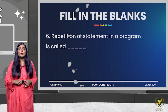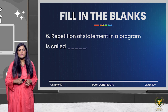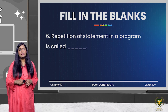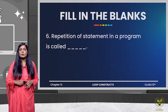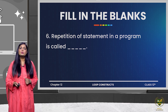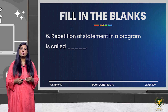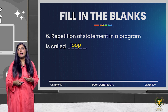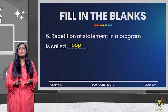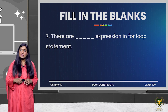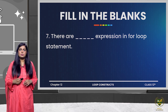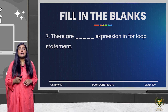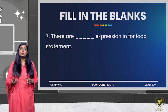The next question is: repetition of statements in a program is called dash. That is very easy — whatever repetition occurs is called a loop, meaning iterative, meaning repeating again and again.